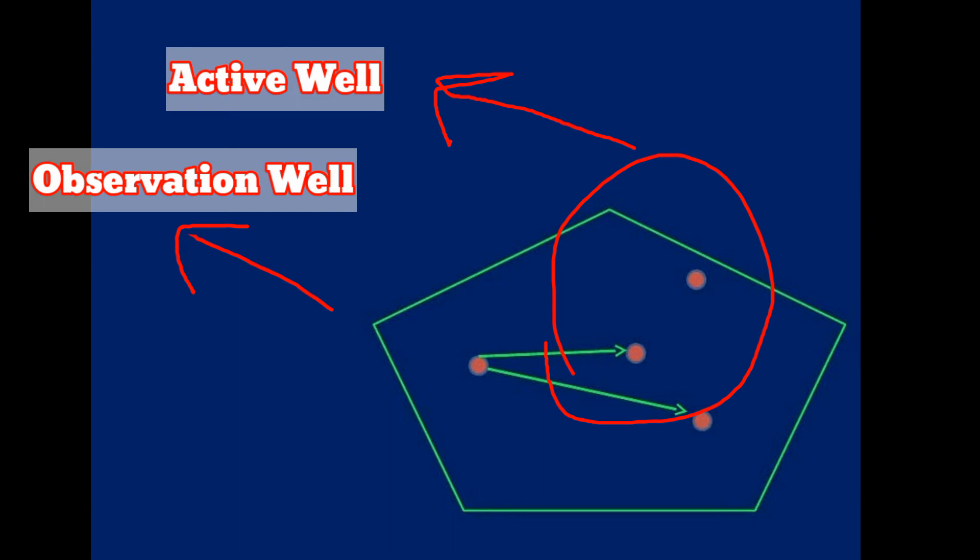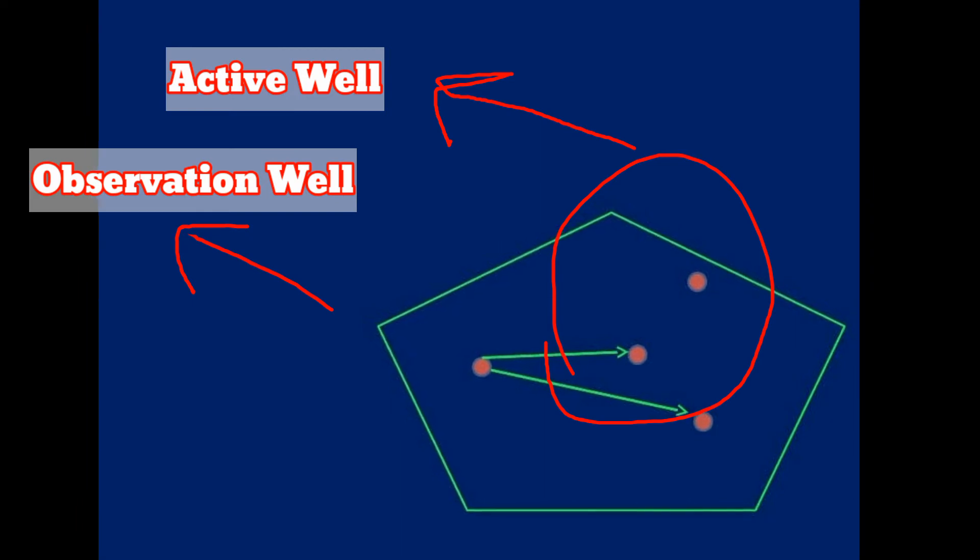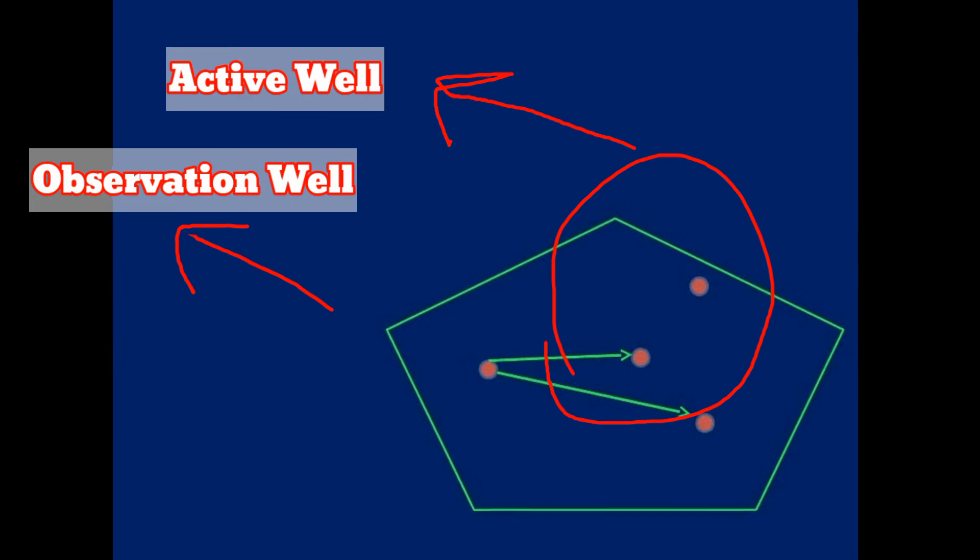After the interference test is completed, the pressure recorder is pulled out from the well. The change in pressure with time is determined from the interpretation of the pressure chart.